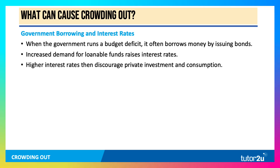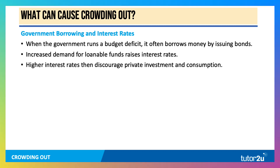So what can cause crowding out? The key is to understand the possible theoretical relationship between government borrowing and interest rates. Let's say the government decides to increase their budget deficit — instead of borrowing £10 billion, they might decide to borrow £20 billion.